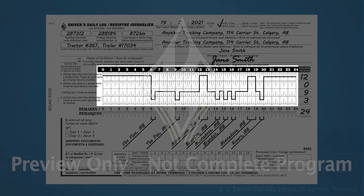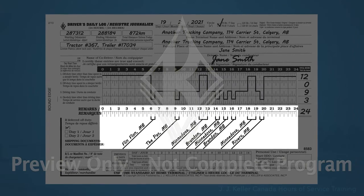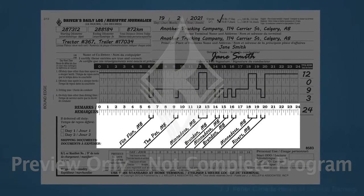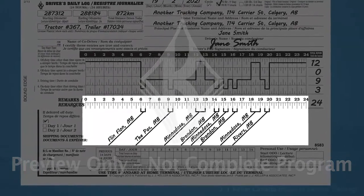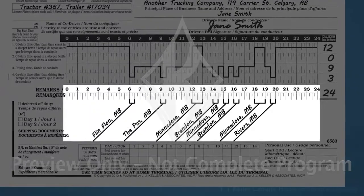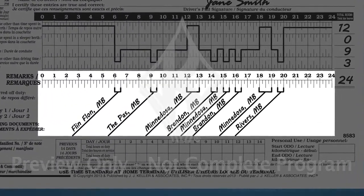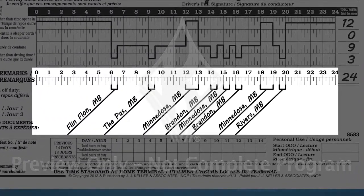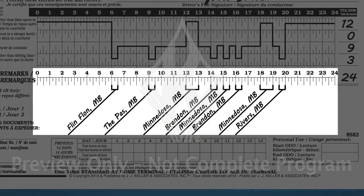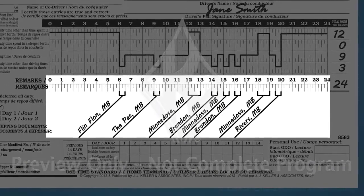During the day, you need to complete the graph grid, where you indicate your duty status times with a continuous line between time markers. You also need to complete the remarks section, which is the area underneath the graph grid. Use it to indicate the locations of your duty status changes. Most other remarks, such as daily inspections or fueling, are entered due to company policy. However, remarks are very helpful to understand any unique circumstances.